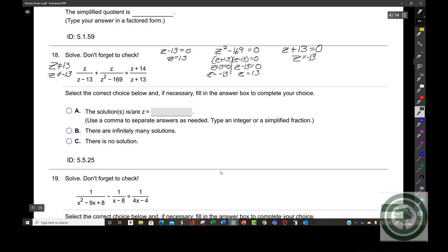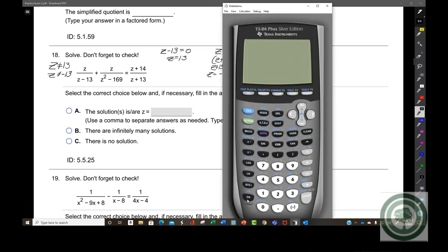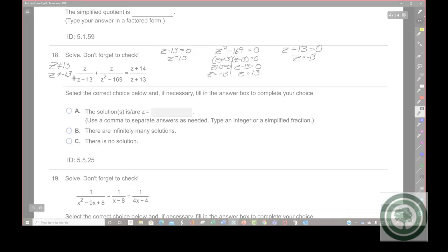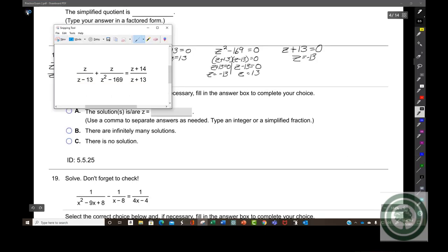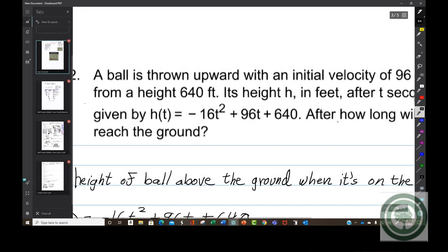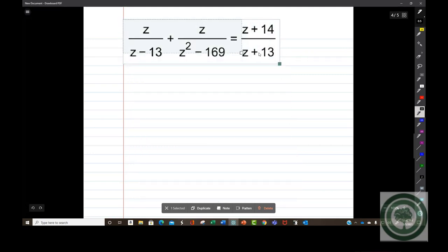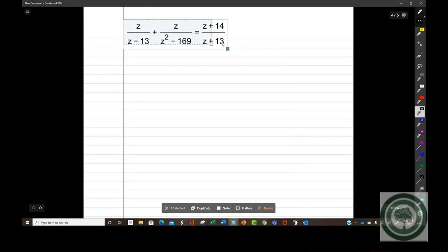You set each factor equal to 0. Z plus 13 equals 0, z minus 13 equals 0. So you're going to get z equals negative 13 and z equals positive 13. These are all the numbers that z cannot be allowed to equal. So you want to write it down somewhere that z cannot equal 13 and z cannot equal negative 13.